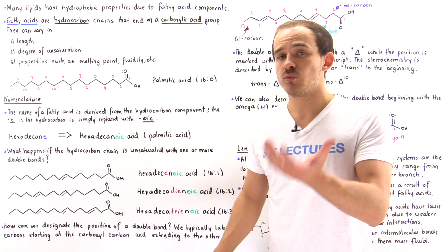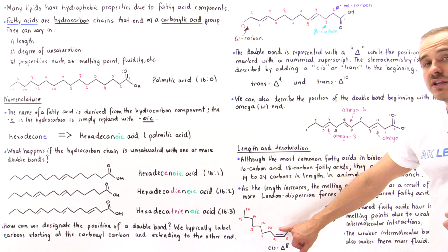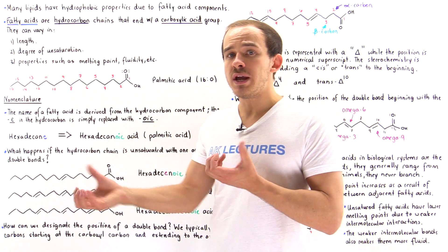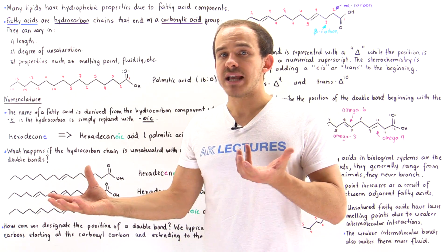And in the second beaker, we have a fatty acid that contains this cis double bond. What exactly is the difference between one beaker and the second beaker?